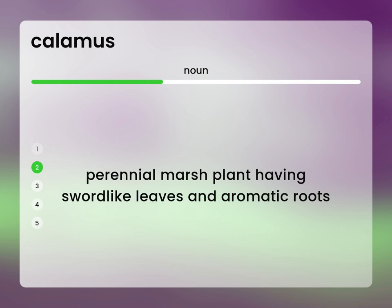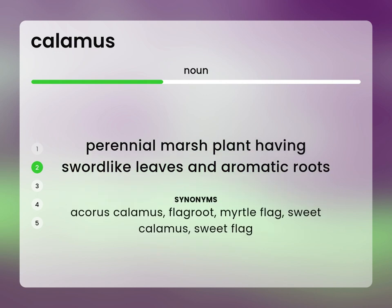Perennial marsh plant having sword-like leaves and aromatic roots: Acorus calamus, FLA groot, myrtle flag, sweet calamus, sweet flag.